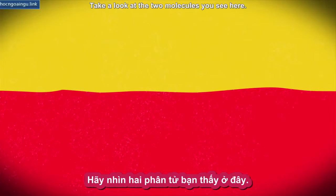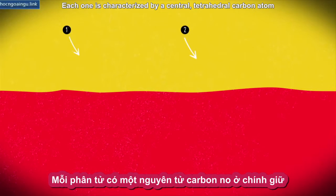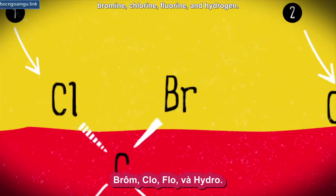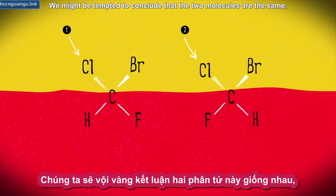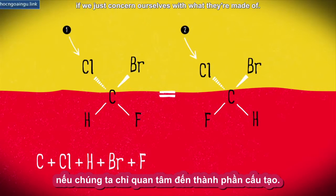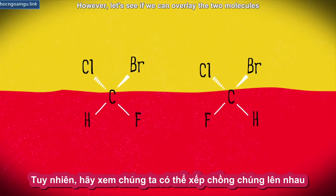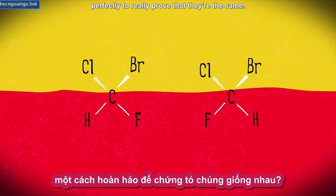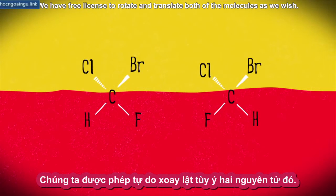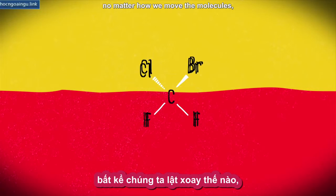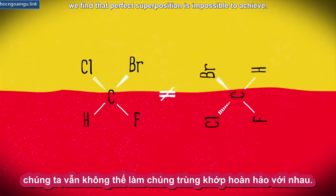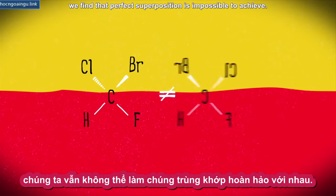Clearly, there's something unique about this class of compounds. Take a look at the two molecules you see here. Each one is characterized by a central tetrahedral carbon atom bound to four different atoms: bromine, chlorine, fluorine, and hydrogen. We might be tempted to conclude that the two molecules are the same if we just concern ourselves with what they're made of. However, let's see if we can overlay the two molecules perfectly to really prove that they're the same. We have free license to rotate and translate both molecules as we wish. Remarkably, though, no matter how we move the molecules, we find that perfect superposition is impossible to achieve.